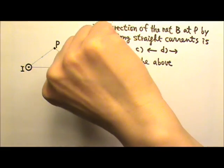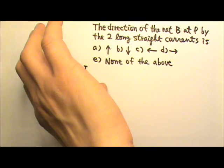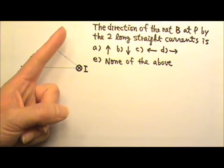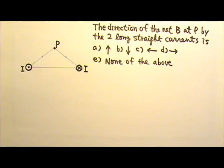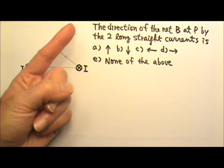If I use my thumb to follow the current, the curve of the four fingers will go that way at point P, go in that direction. If it is not obvious to you that the direction of the magnetic field goes that way at point P, we can look at the magnetic field lines first.